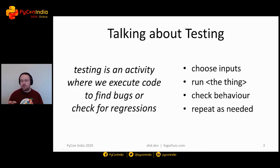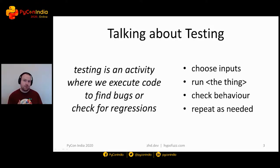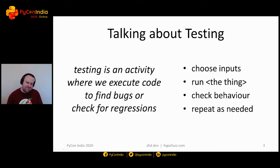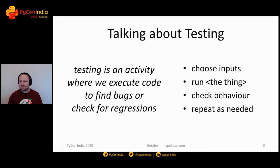The activities that we do when we're testing I basically break up into four parts. The first is that we choose what inputs we're going to test on — what files do we feed in, what do we call our test function with, what websites or buttons do I click on. Then we run whatever the code is that we're testing. That's the core part. And then at the end, we check that it did the right thing, or at least it didn't do anything we know to be wrong, like crash or raise an exception. And then finally, we repeat that as often as we need to.